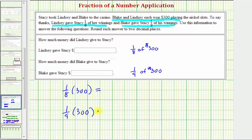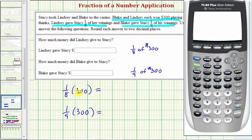So let's go ahead and find these products on the calculator. So for 1/8 times 300, we have 1 divided by 8 and then times 300, which is equal to 37.5, which means Lindsey gave Stacy $37.50.